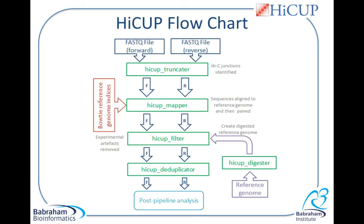So how does HICCUP work? Essentially, HICCUP is a series of Perl scripts which perform different tasks in analysing the Hi-C data. From the sequencer, after performing paired-end sequencing, you should have two FASTQ files, one for the forward read and one for the reverse read.